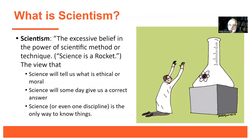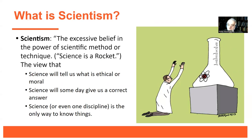Logical positivism is an example of what the book calls scientism — an excessive belief in the power of scientific method or technique. I recall a graduate student I was interviewing who, when asked whether we'd ever know if alcoholism is genetically caused, said, 'Oh yeah, science is a rocket — we're going to know for sure one day.' That kind of overconfidence illustrates scientism.